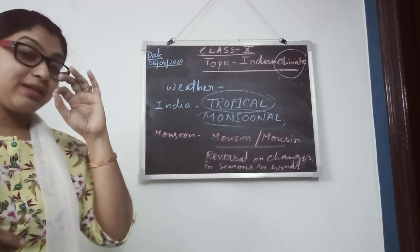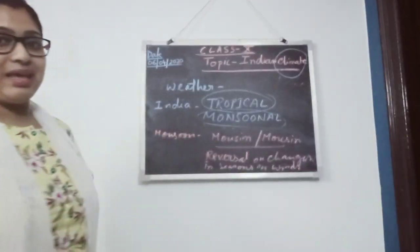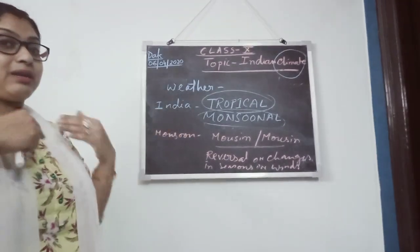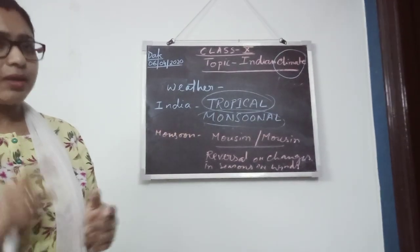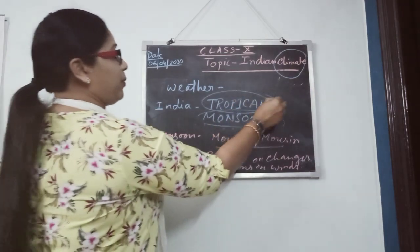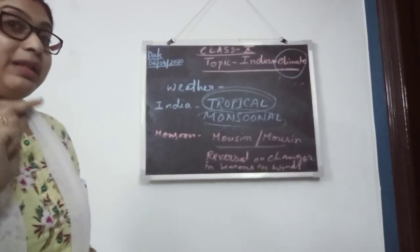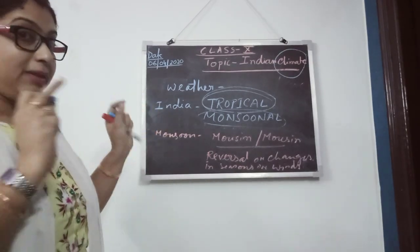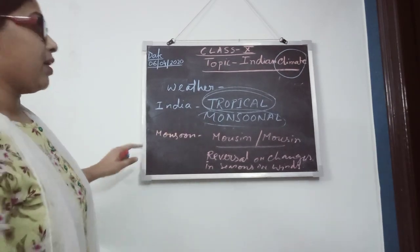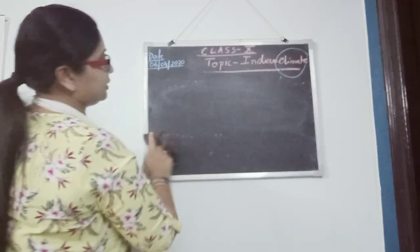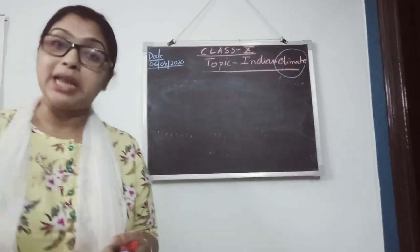Whatever you have read about land breeze and sea breeze — that only in a larger, broad-based sense in India we can experience. That is why we see a reversal in wind direction. So it is tropical because the Tropic of Cancer passes through the middle part of India, and monsoon means changes in seasons. Now let's look at the factors that control Indian climate.